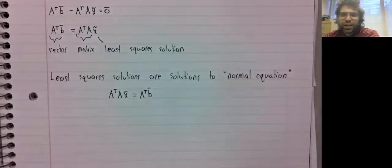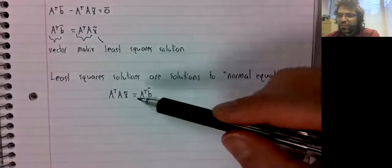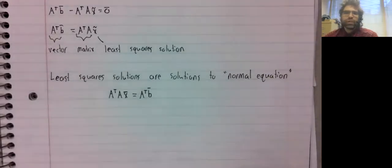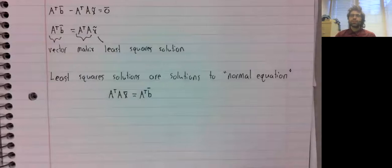And you can then just solve this equation. No orthogonal projection necessary. No Gram-Schmidt process necessary. I mean the orthogonal projection is going on in the background, but you don't actually have to do it in order to find least squares solutions.